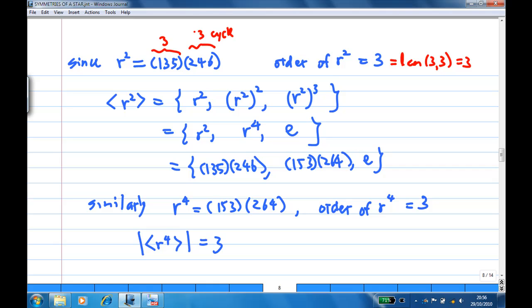Therefore, the cyclic subgroup generated by R^2 consists of R^2, (R^2)^2, and (R^2)^3 where (R^2)^3 is E. So, you have R^2, R^4, and E. The subgroup generated by R^2 is given by this.